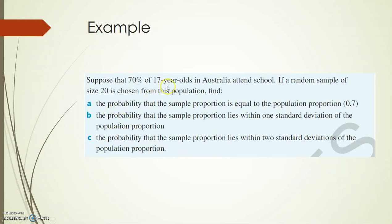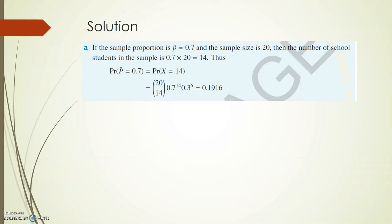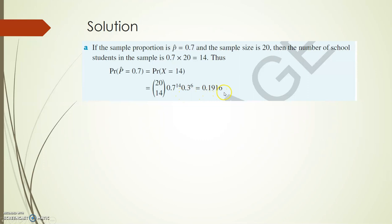This is a large population — all 17-year-olds in Australia. For part a: if p-hat is 0.7 and the sample size is 20, then the number of school students in the sample is 0.7 times 20, which is 14. So finding the probability that p-hat equals 0.7 is the same as finding the probability that x equals 14. Using the binomial formula, we work out 20C14 times 0.7 to the power of 14 times 0.3 to the power of 6. Using binomial pdf on our calculator, the answer is 0.1916.